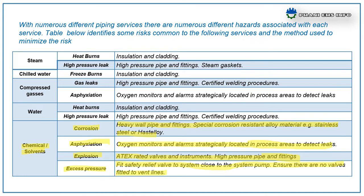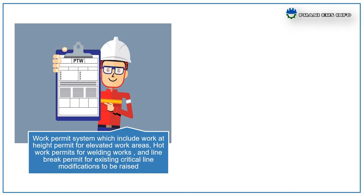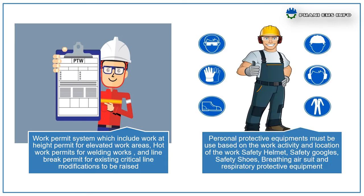Next: safety tips for pipeline erection works. For pipeline erection works, the first step is to obtain a work permit. This includes a work permit system, a work-at-height permit for elevated areas, hot work permits for welding works, and a line-breaking permit for existing critical line modifications. Second, personal protective equipment must be used based on the work activity and location, including safety helmet, safety goggles, safety shoes, breathing air suits, and respirator protection equipment.